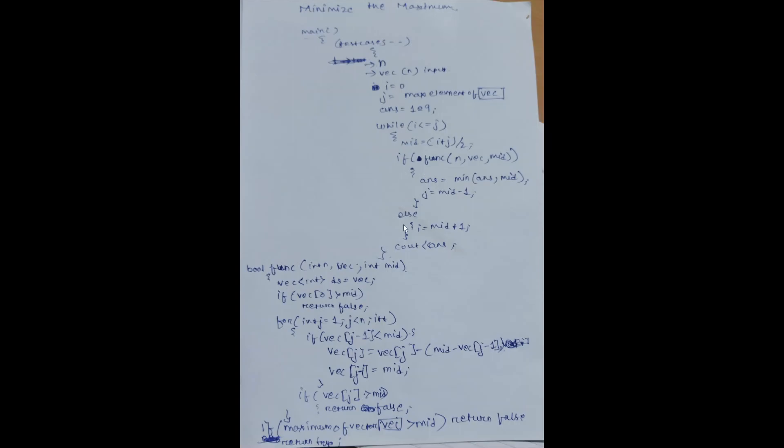We have initialized answer as 1e9 because we have to find the minimum, and the minimum of 1e9 and mid will always be mid. Then further on, we will get the minimum answer that we want.